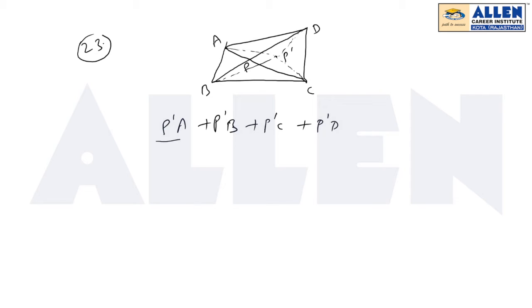Now club P'A and P'C, and club P'B and P'D. So from triangular inequality, we find P'A plus P'C is greater than or equal to AC, and P'B plus P'D is greater than or equal to BD. So the sum is greater than or equal to AC plus BD.